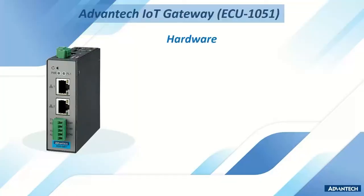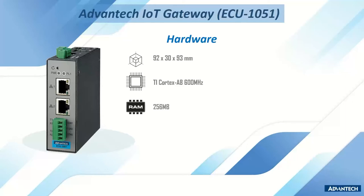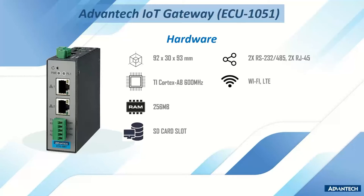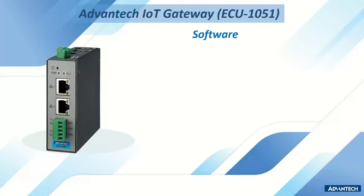The Advantech IoT gateway ECU-1051 is a compact, powerful, and high-connectivity device. It comes in a palm-size form factor of 92 x 30 x 93 mm, powered by a TI AM335x processor at 600 MHz, with 256 MB of RAM and an SD card slot for storage. It supports two communication ports and two internet ports, with optional wireless communication including Wi-Fi and LTE. It operates at 10–30 VDC and supports DIN rail or wall mounting.